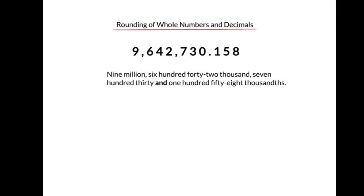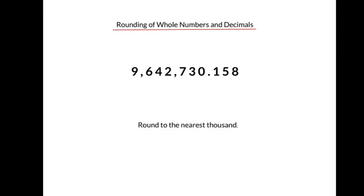Let's take a look at rounding of whole numbers and decimals. Here we're given a number in standard form and word form. The number is 9,642,730 — and 'and' means the decimal — one hundred fifty-eight thousandths. Let's remove the word form.